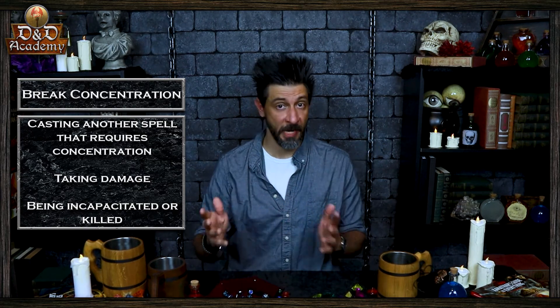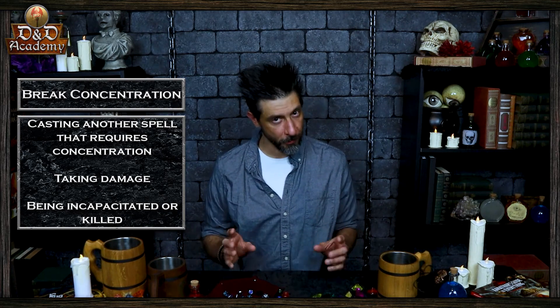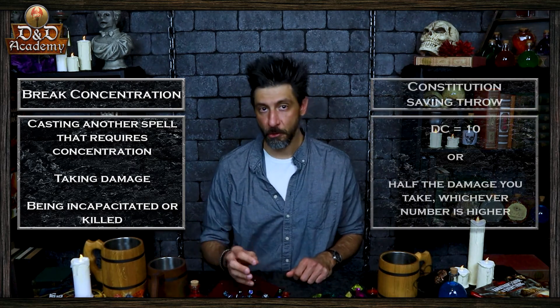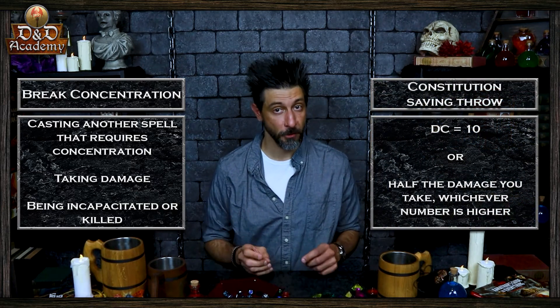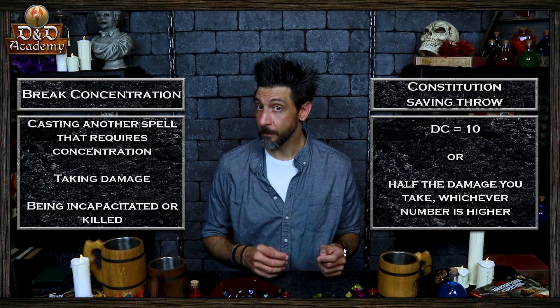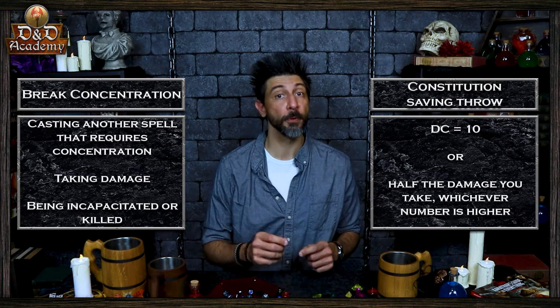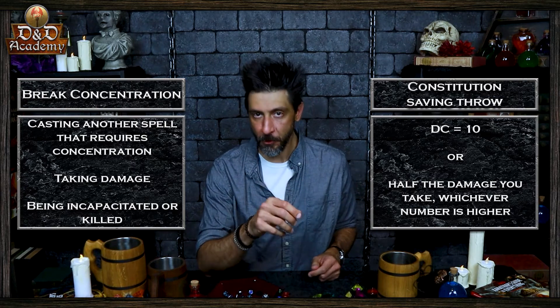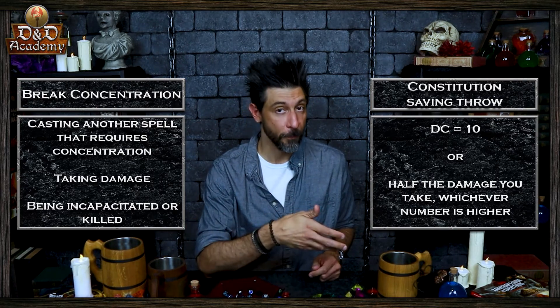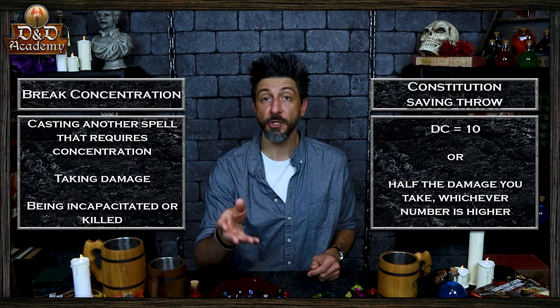The following factors can break concentration. The first is the casting of another spell that requires concentration — you cannot concentrate on two spells at once. Also, the taking of damage: whenever you take damage while concentrating on a spell, you must make a Constitution saving throw to maintain your concentration. The DC equals 10 or half the damage you take, whichever number is higher. If you take damage from multiple sources, such as an arrow and a dragon's breath, you make a separate saving throw for each source of damage.